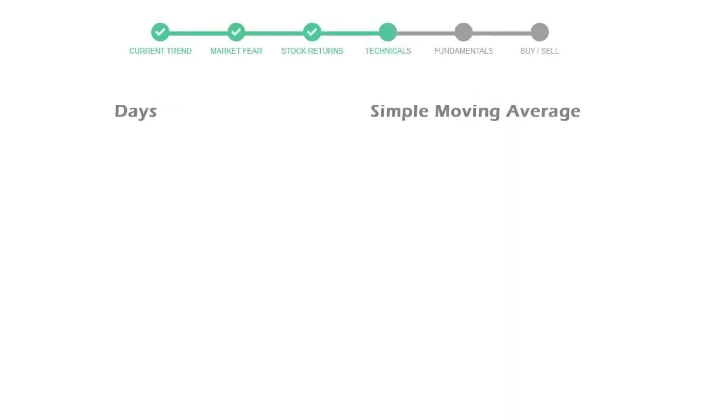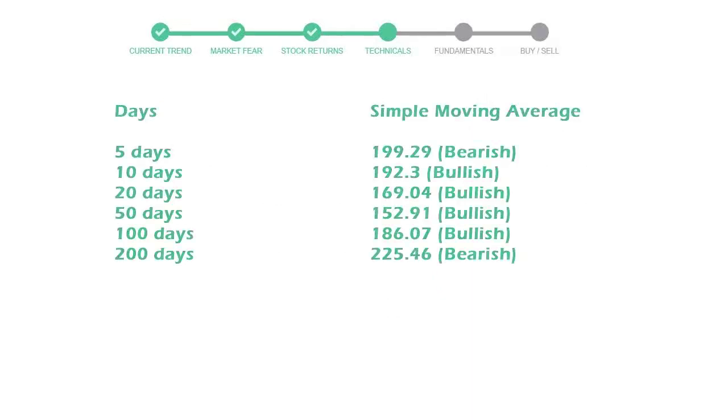Now let's have a look at simple moving average data. The five-day average for Tesla is moving with 199 towards a bearish indication.